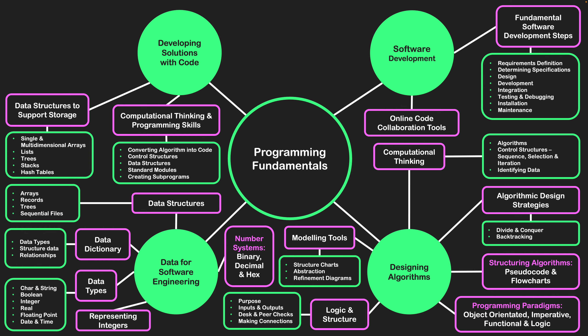The next point is back to data structures in the context of supporting storage. The use of single or multi-dimensional arrays — a single array being just one row of different forms of data, and multi-dimensional arrays where you have an X and Y axis, a grid of data that we can request from by referencing points on the X and Y axis. The use of lists for storing data, the use of trees for storing data, and stacks.